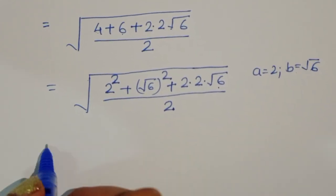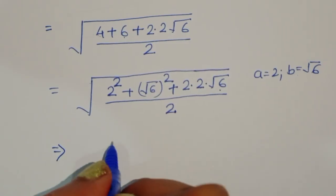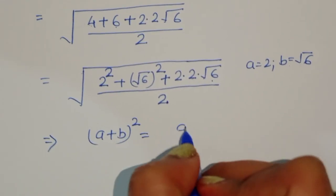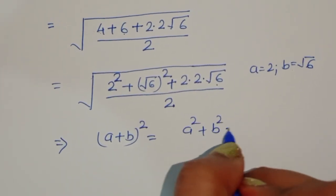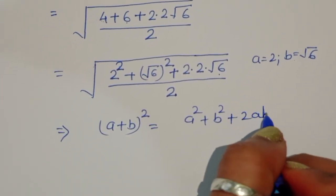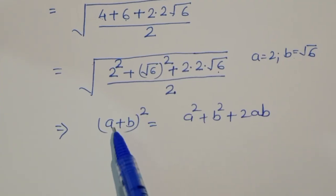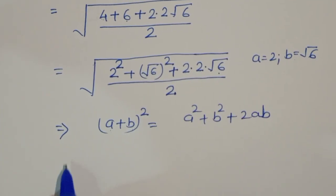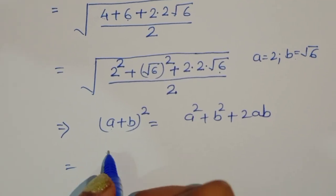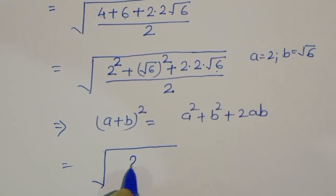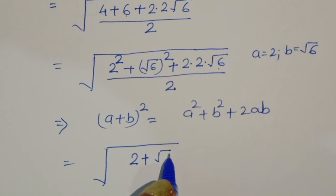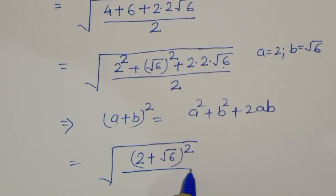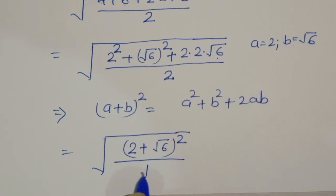This is the form of a plus b whole square, since a squared plus b squared plus 2ab equals a plus b whole square. Here a is 2 and b is square root of 6, so we can write this as 2 plus square root of 6 whole square, divided by 2.